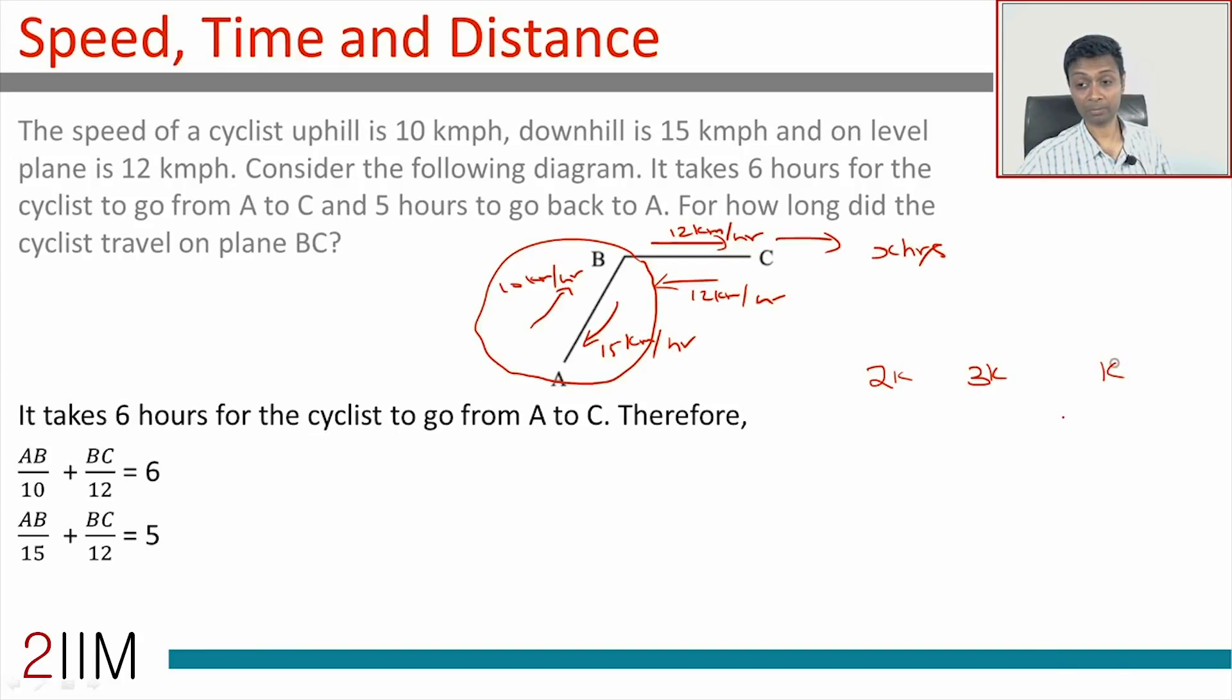The difference is 1k. The difference between time taken to go uphill and downhill is 1 hour, so this k is equal to 1 hour. To go uphill it takes 3 hours, to go downhill it takes 2 hours.